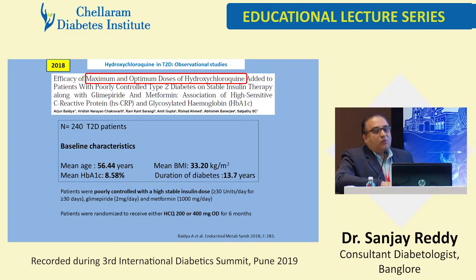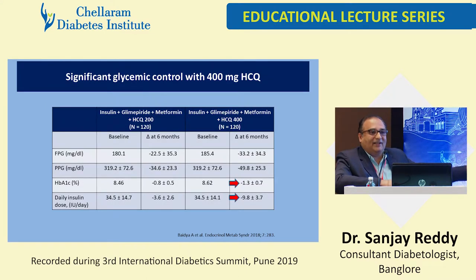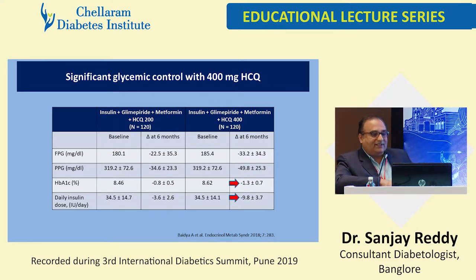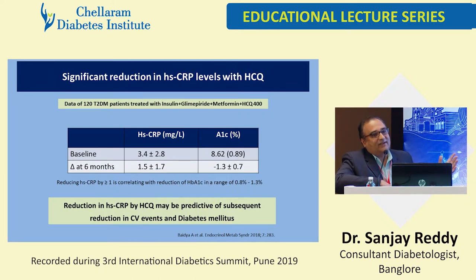What is the optimum dose — why 400mg and not 200mg or 600mg? Earlier studies used 600mg, some used 400mg. A dose-ranging study was done in patients on insulin, glimepiride, and metformin — comparing HCQ 200mg versus HCQ 400mg. There was a significant difference favoring 400mg compared to 200mg, with better therapeutic levels achieved. So 400mg is the better dose. In this study, HSCRP was also measured and showed a significant decrease.